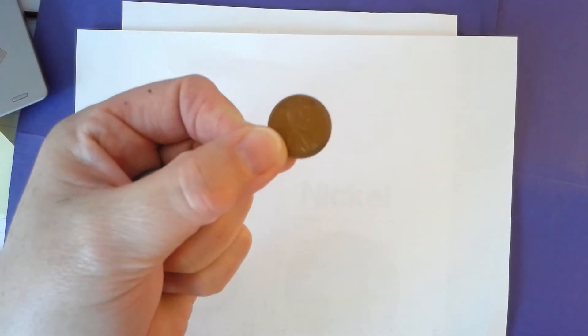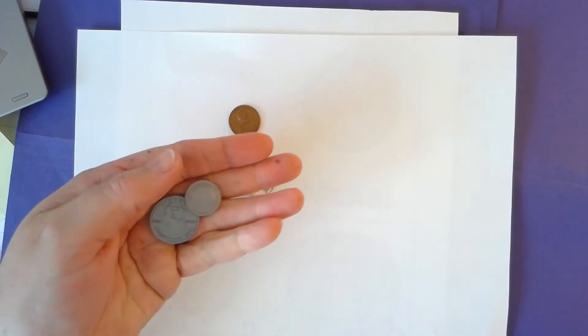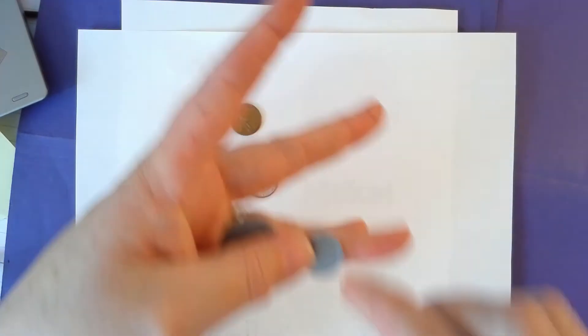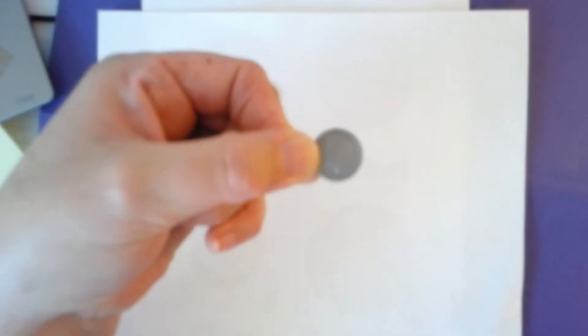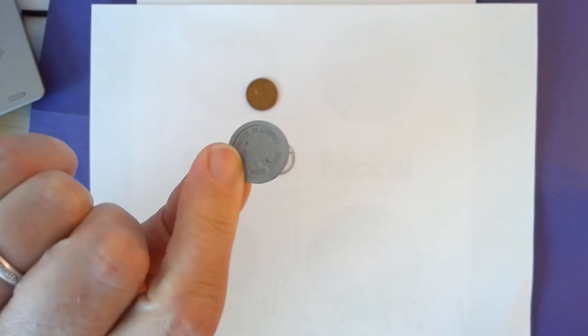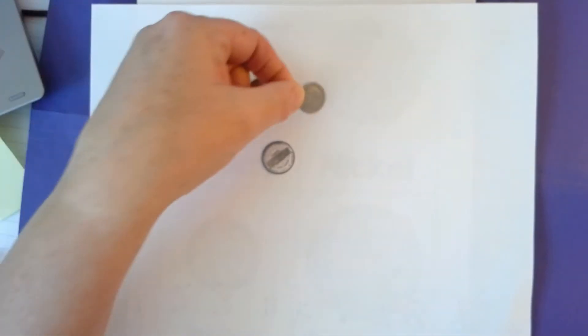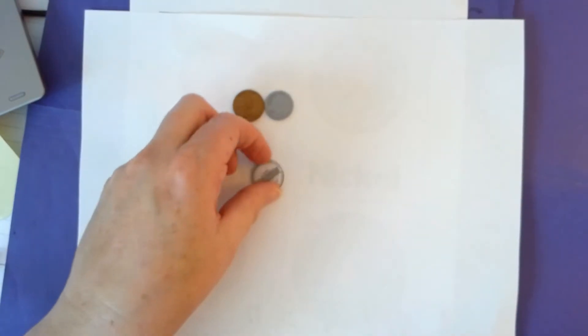So this is a penny. It's copper or brown. This smaller one is a dime. Focus in. That's a dime and that's the back side of the dime. And you can see it's smaller than the penny.